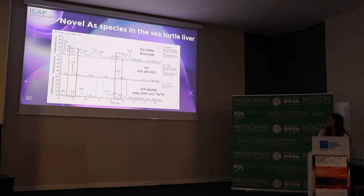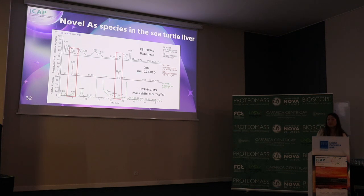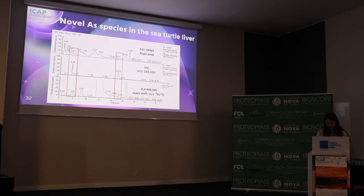Here is the high-resolution mass spectrometry extracted ion chromatogram showing the exact mass found at two different retention times. These are different biomolecules with the same mass-to-charge ratio but different polarities. The ICP-MS chromatogram shows the transient signal of arsenic with a peak matching one of the signals, confirming that it is an organoarsenic.